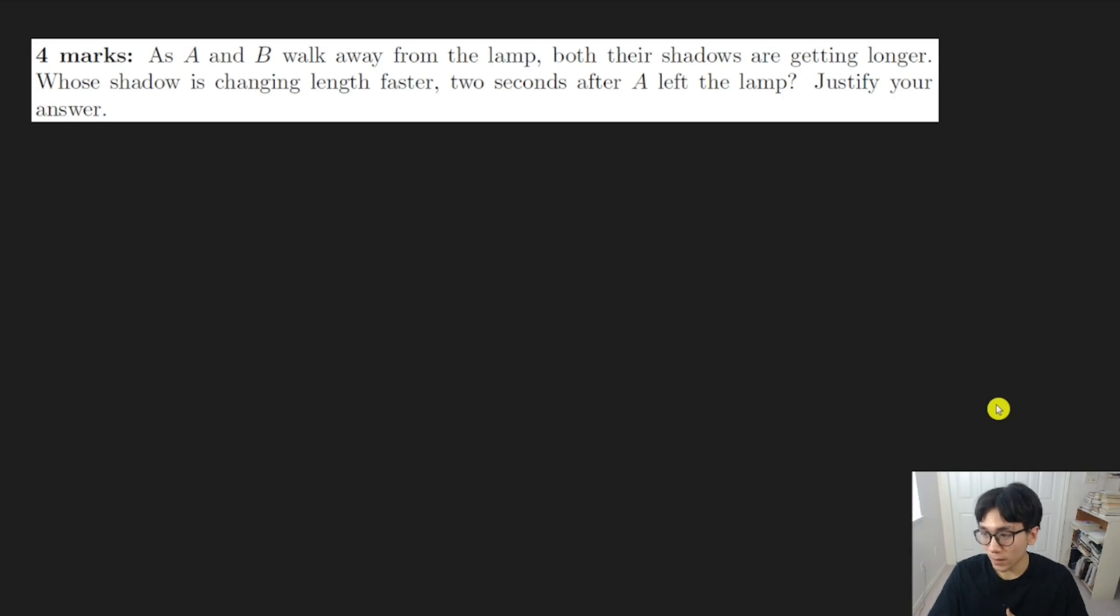Okay. So the next part here is where we talk about related rates, right? As A and B walk away from the lamp, both their shadows are getting longer. And we want to know whose shadow is changing length faster, two seconds after A left the lamp. Okay. Justify your answer. Now this part at the end, justify your answer, it seems like we're trying to give an explanation, you know, maybe some intuitive explanation. But actually what the question really we need to do is just solve the problem, just solve the related rates problem. Okay. That is going to be how we justify.